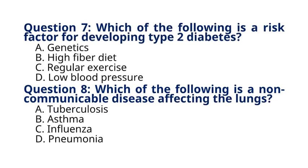Question 7: Which of the following is a risk factor for developing type 2 diabetes? A. Genetics, B. High-fiber diet, C. Regular exercise, D. Low blood pressure. The correct answer is option A, Genetics. Explanation: Genetics plays a role in the development of type 2 diabetes, along with other factors such as obesity, sedentary lifestyle, and poor diet.